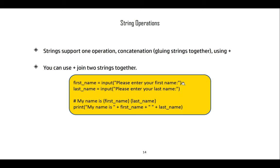Strings support one operator: the concatenation operator. Concatenation is gluing strings together using the plus operator. So we can use plus to join two strings. For example, if we take the first name and last name from user input and want to display 'my name is first name last name', we use the concatenation operator with a space.